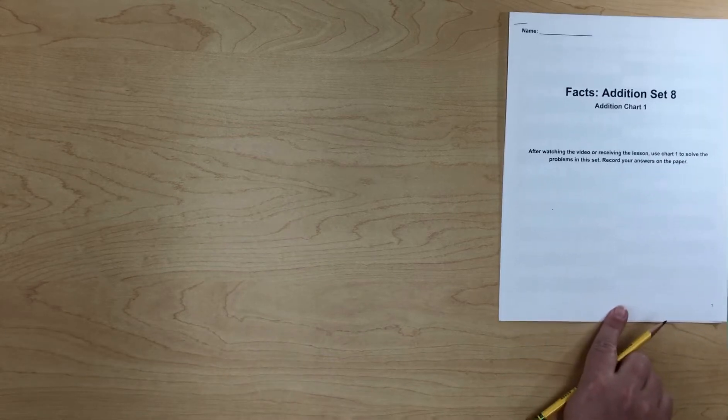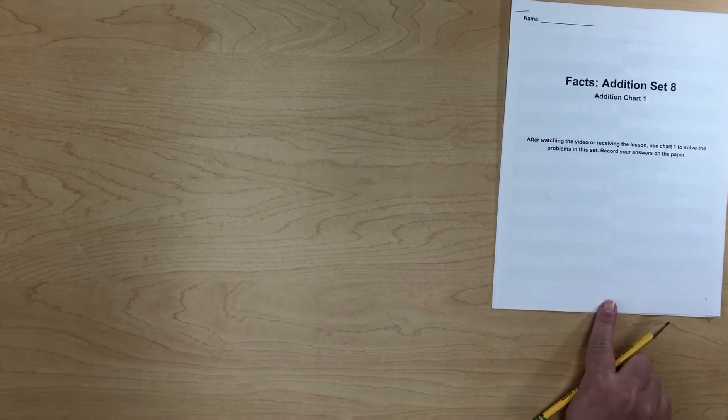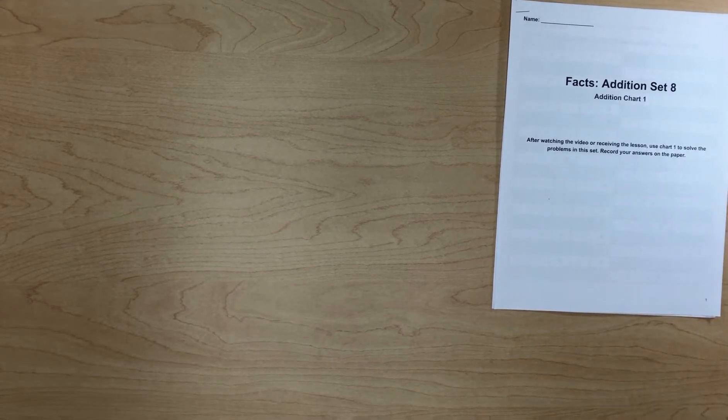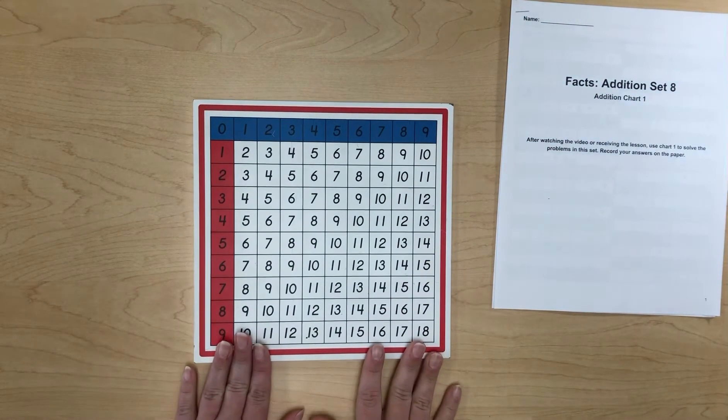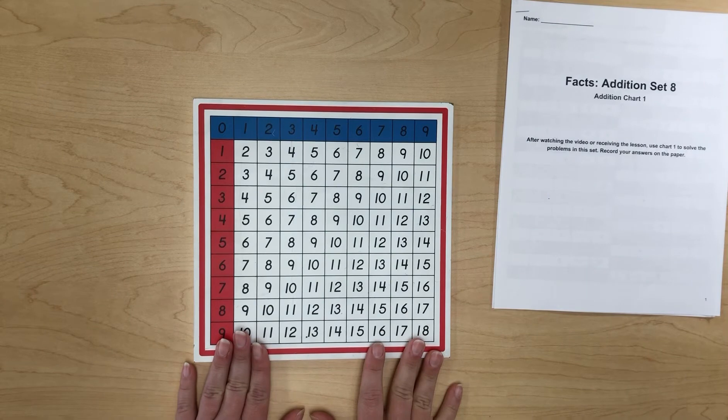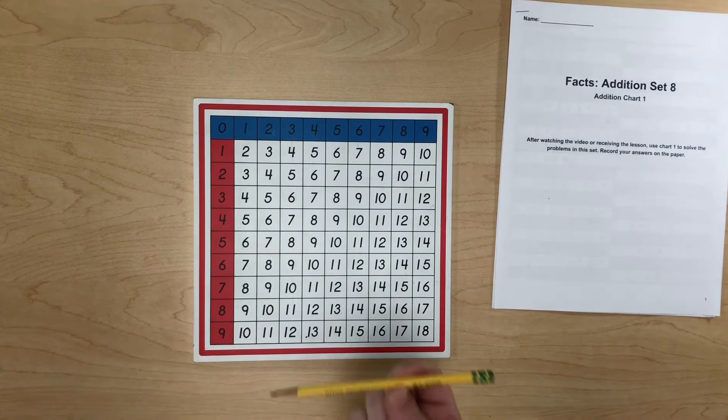For this lesson you'll need your Facts Addition Set 8 packet. You will need your paper Addition Chart or you may use the one that is on Canvas, and you'll need a pencil.